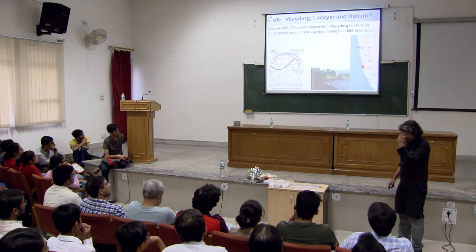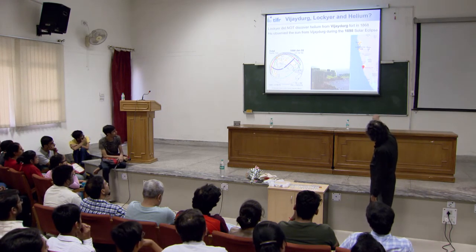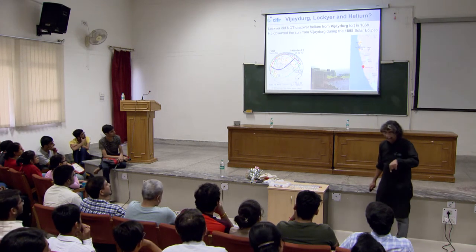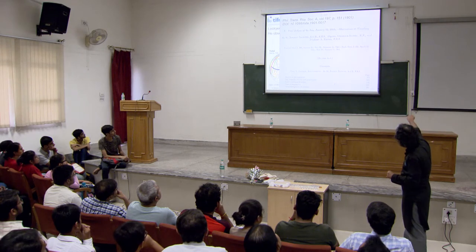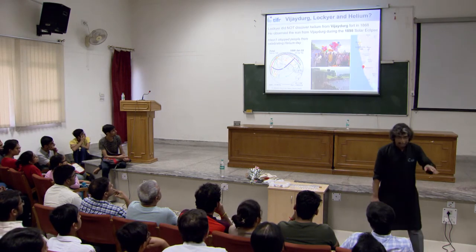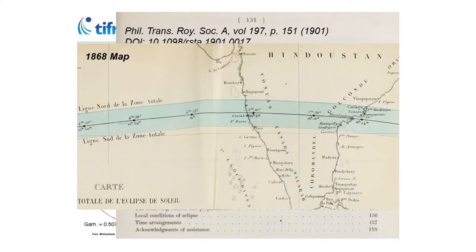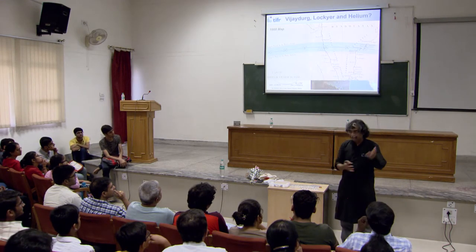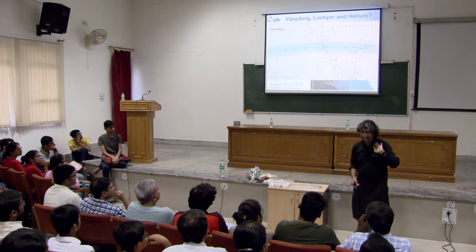Lockyer did not discover helium from Vijaydurg — there's a story that he did, but Vijaydurg is a fort between Mumbai and Goa. There was another eclipse in 1898 that went that way, and Lockyer came to India to observe it. He wrote a paper titled 'Total Eclipse of the Sun, Observed at Vijyadrog,' but this paper has nothing on helium — it's on the solar eclipse only. Still, people in Maharashtra celebrate World Helium Day at the fort. Science outreach is good. The confusion arises because if you look at the original 1868 eclipse map, Vijaydurg would have been in the region of totality. Some scientist came and did some science experiments. After 200 years it doesn't matter — 'some guy came, he must have observed helium from here.'